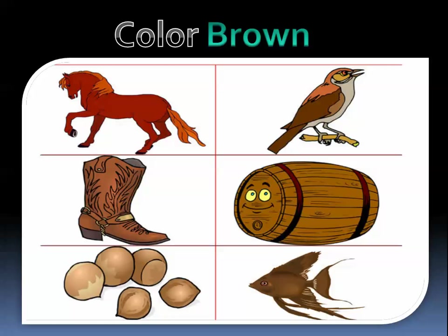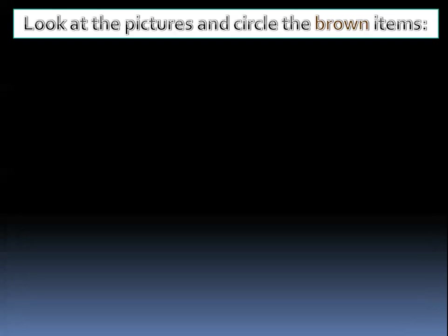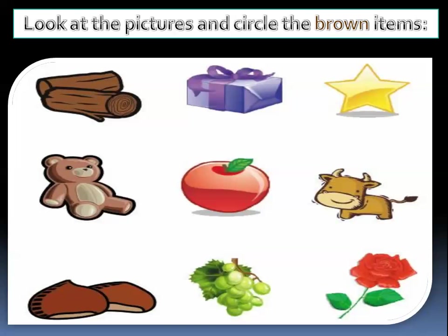Let's do a simple exercise about the color brown. Look at the picture and circle the brown items. What are these? These are logs. The logs are brown, so we will circle the brown logs. And the gift — is the gift brown? No, it's not brown. The star — is it brown? No. The teddy bear — what color is this teddy bear? This teddy bear is brown. Excellent.